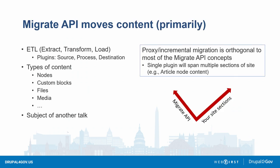Let's talk about the Migrate API. It's an ETL process — Extract, Transform, Load — and in the Migrate API we call that source, process, destination. You could be migrating nodes, custom blocks, files, media, even configuration sometimes. The key issue for incremental migrations is that a plugin to migrate articles will migrate articles from the about section and from the research section of your site, and we want to do one section at a time.